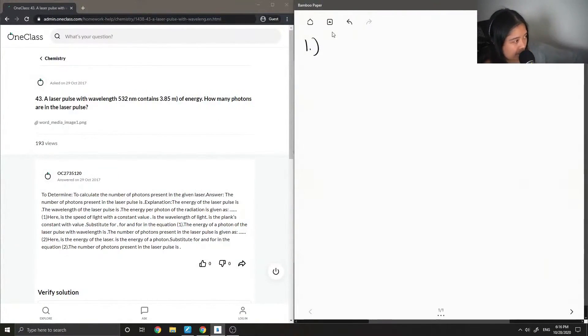Question number one asks: a laser pulse with wavelength 532 nanometers contains 3.85 millijoules of energy. How many photons are in the laser pulse?